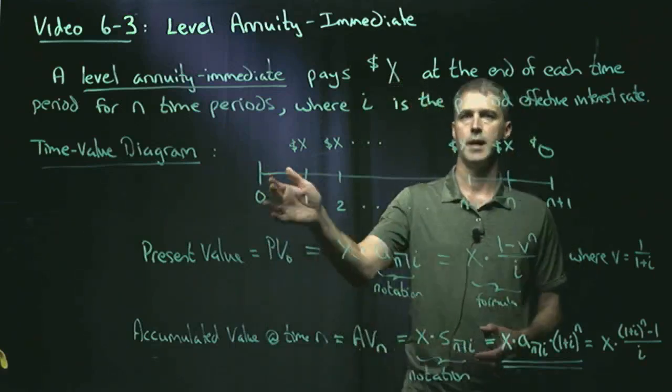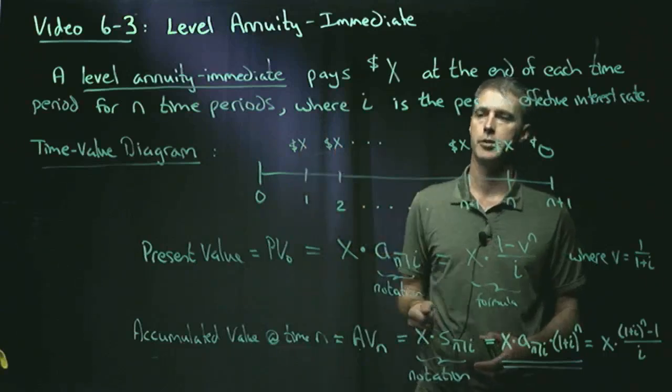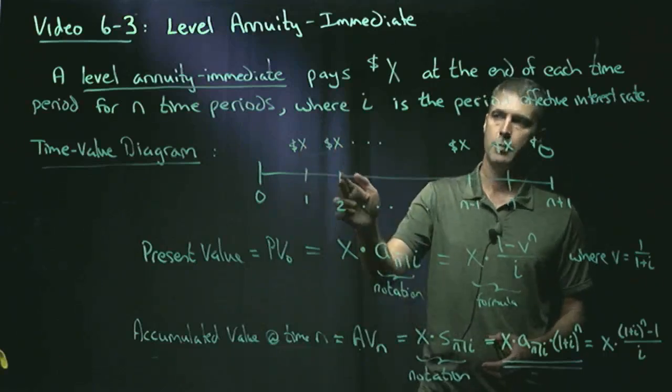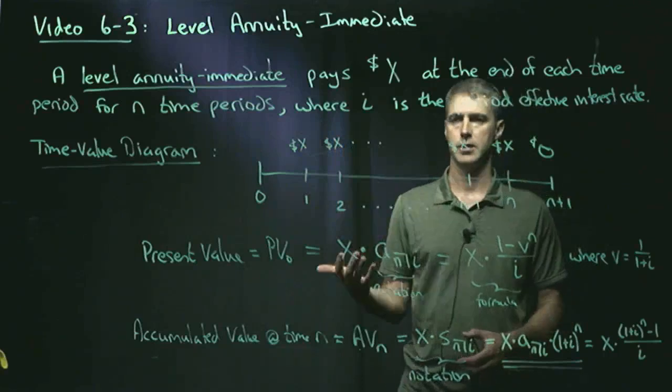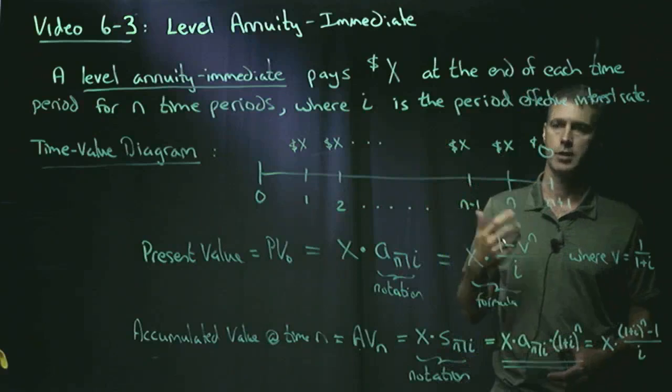The annuity starts at time zero, and you receive the first payment one period later of X dollars. At the end of the second period, you receive the second payment of X dollars. And at the end of the Nth period, you receive the final payment of X dollars.